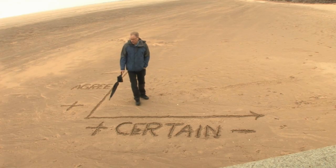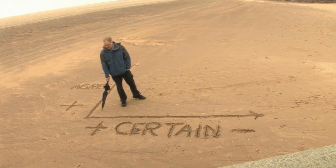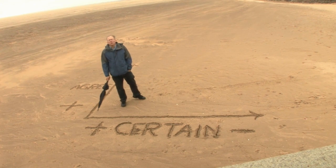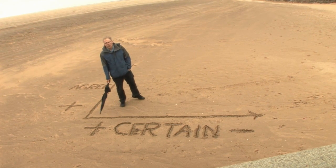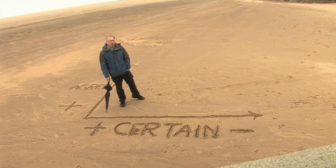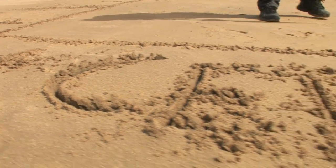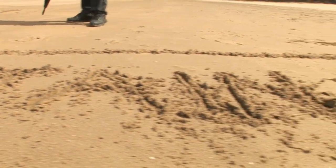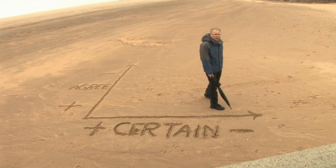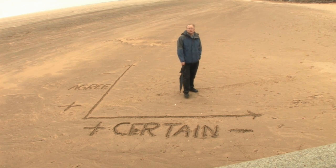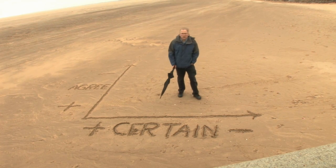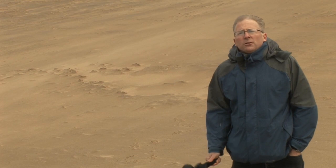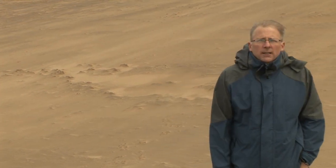On the other axis, the question is: what is the degree of certainty that we know about the policy area? At the high end, experts have a high degree of certainty — everybody knows what the problem is, how to deal with it, and they're strongly certain of how to solve it. On this axis you go from high certainty to low certainty, where experts disagree, with multiple ways of answering the question and dealing with the problem.